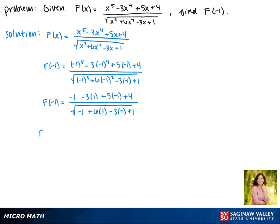Now we'll take care of multiplication. We get -1 - 3 - 5 + 4, all divided by the square root of -1 + 6 + 3 + 1. Adding up the numerator, -1 - 3 is -4.